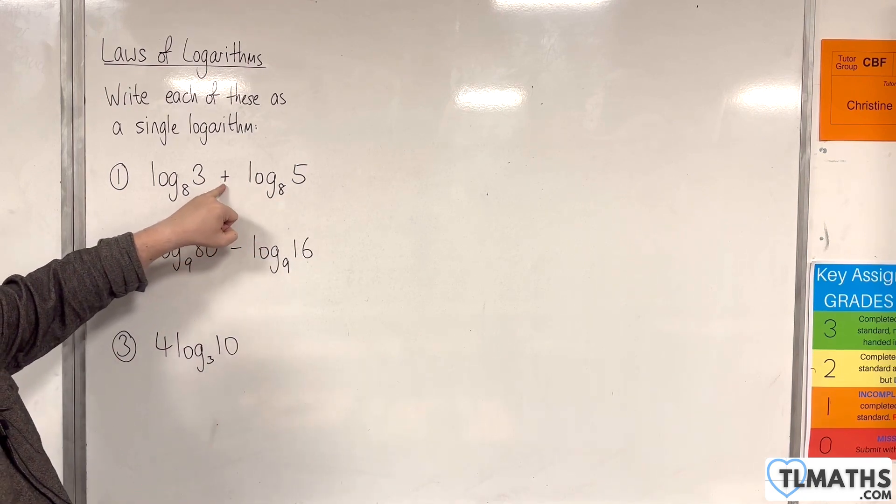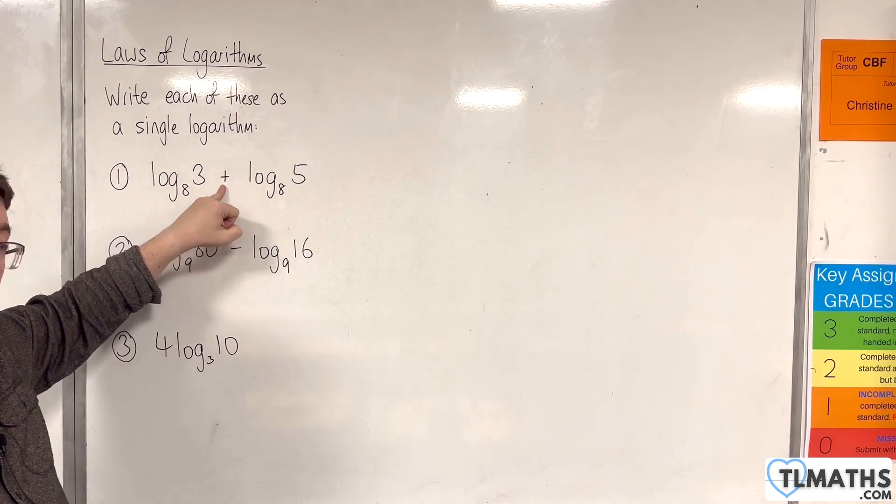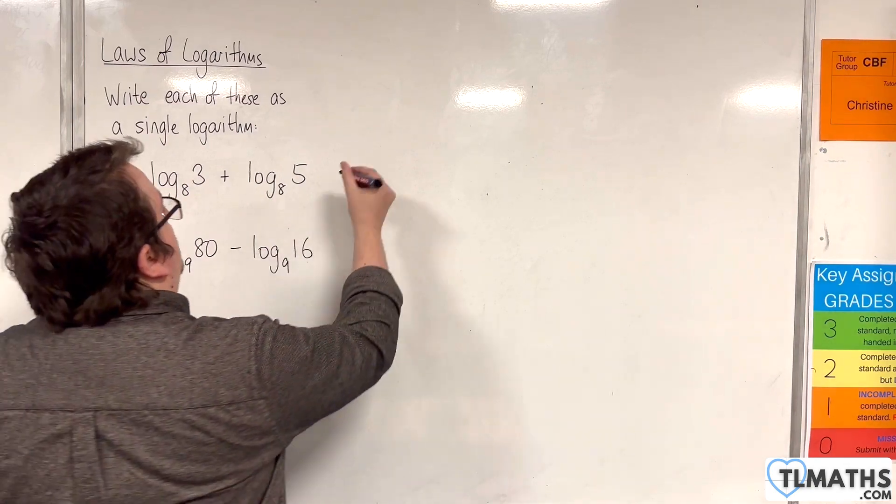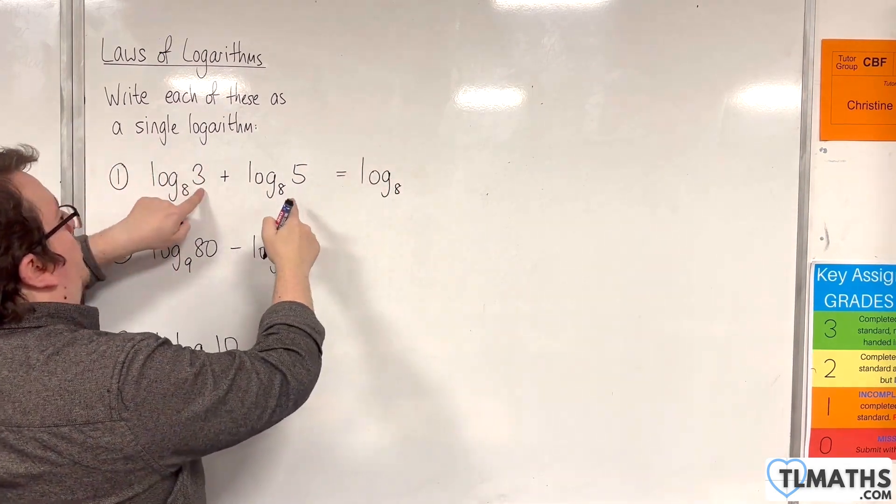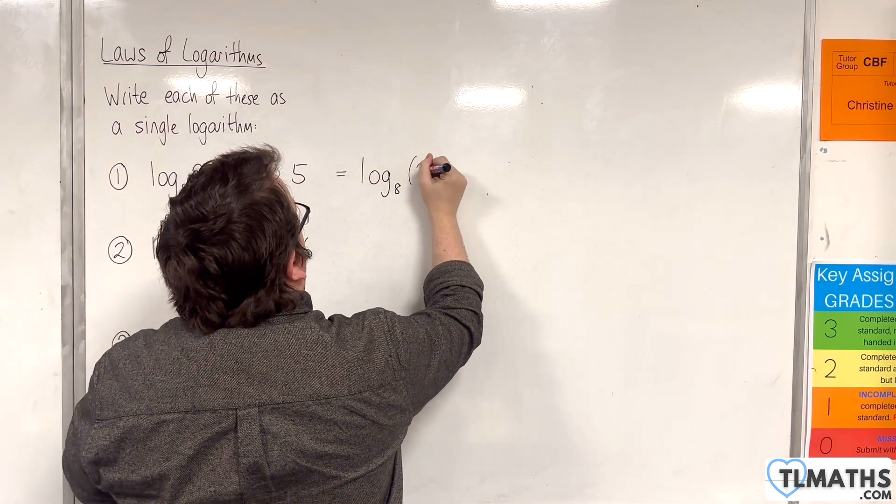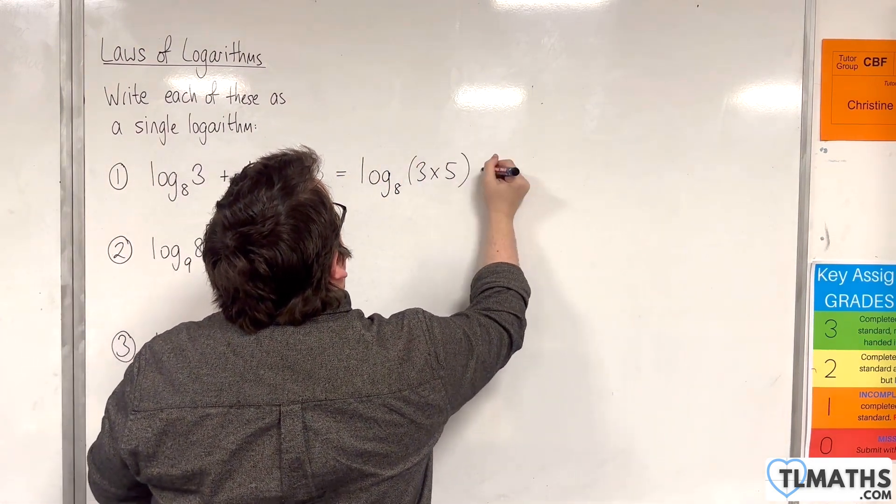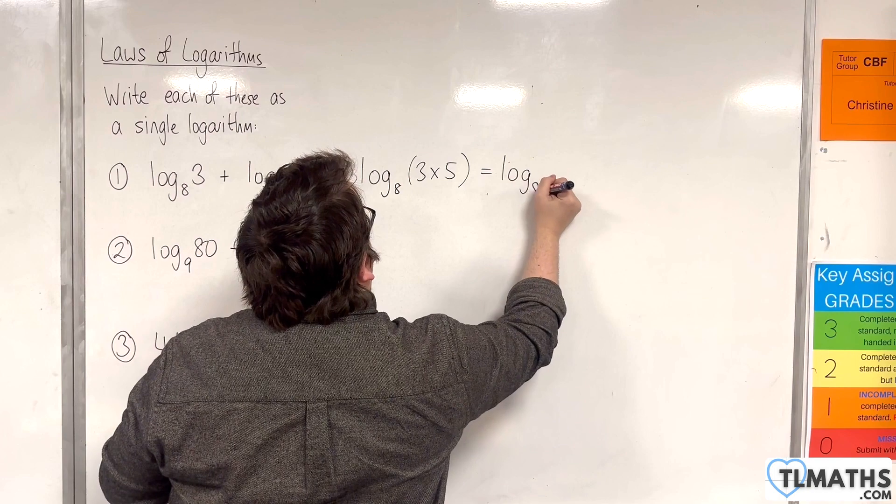Because it's a plus, we're going to use the product rule. And so this would be log base 8 of 3 times 5. So that would be log base 8 of 15.